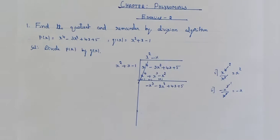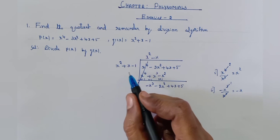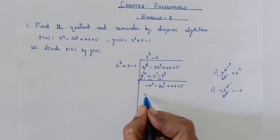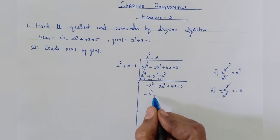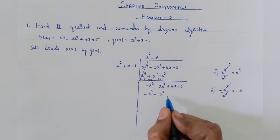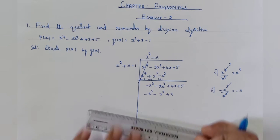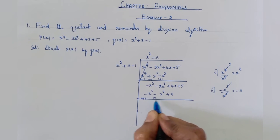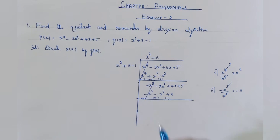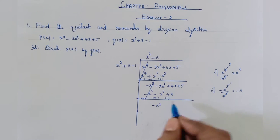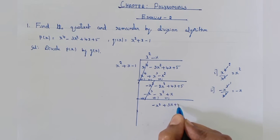Write minus x in the quotient place. Multiply x square plus x minus 1 by minus x: x square into minus x is minus x cube, minus x into x is minus x square, minus 1 into minus x is plus x. Then change the signs of the lower terms: plus x cube, plus x square, minus x. Minus x cube minus x cube get cancelled. Minus 2x square plus x square plus x square is minus x square plus 4x minus x is plus 3x plus 5.